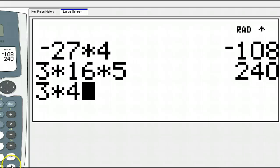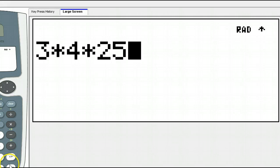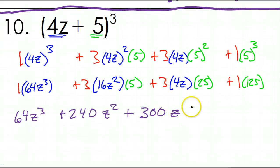Whoops. That wasn't the times button. 3 times 4 times 25. And, sure enough, it's 300. And, then, this last bit is just 1 times 125 is just 125. So, that's it. This would be your answer for number 10.